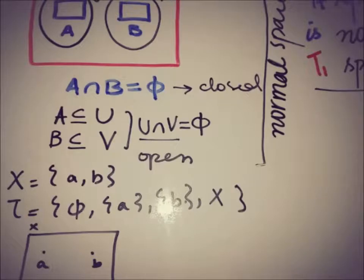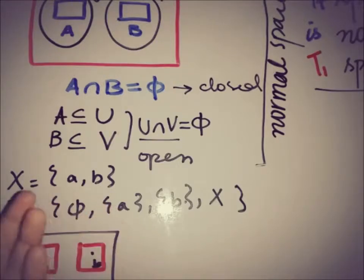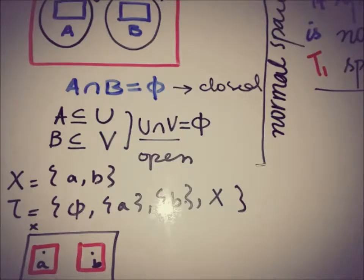In the normal space, we look for two disjoint closed sets, which are A and B. We need open sets that contain A and B respectively. Since A is also an open set and B is also an open set, we trivially have both A and B as clopen sets. This satisfies the definition of the normal space.